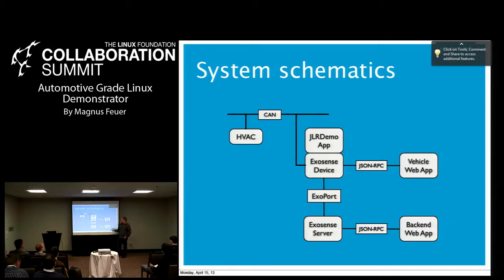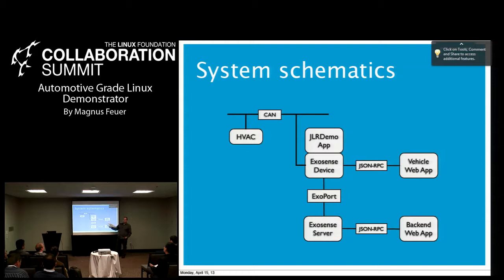The converse is also true. You can go from the backend web app, set the fan speed there, JSON-RPC to the ExoSense server. Since the vehicle is always online, we immediately forward it to the vehicle, emit the CAN frame, and also update the in-vehicle user interface as well.